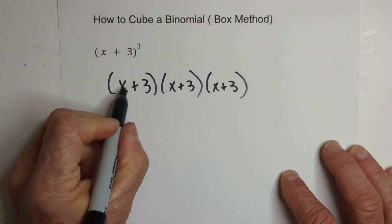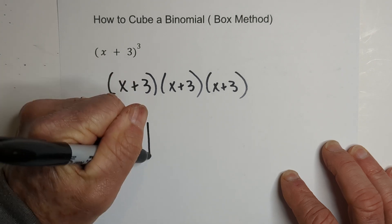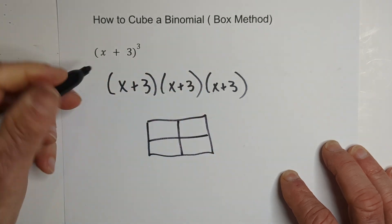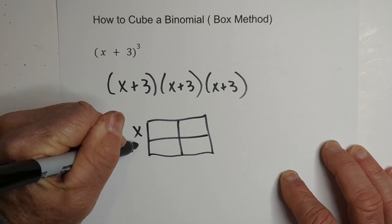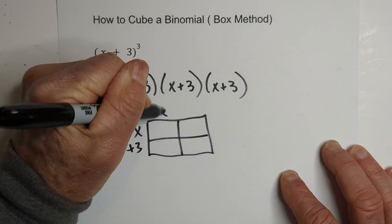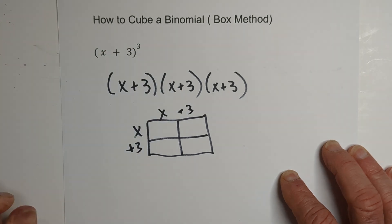Basically, we're going to multiply these two together first. So we're going to draw a box and we're going to put x and +3 there, and x and +3 here.